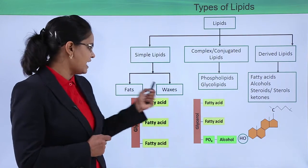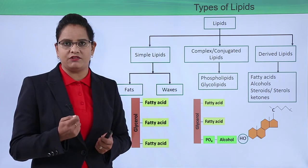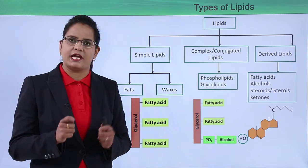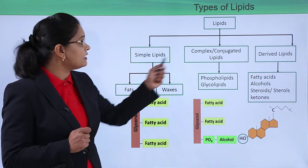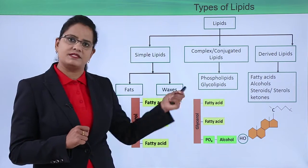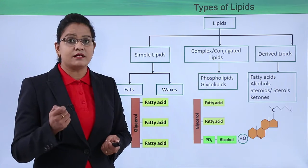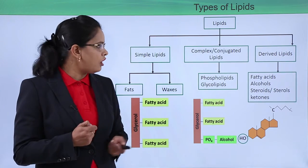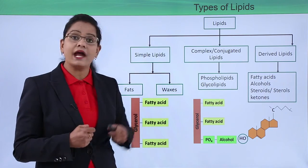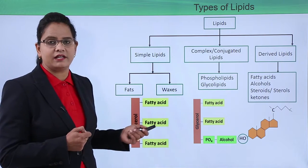Simple lipids can be further classified as fats and waxes. Examples of complex or conjugated lipids are phospholipids and glycolipids. Examples of derived lipids include precursors such as fatty acids and alcohols, as well as steroids like sterols, cholesterol, and ketones.